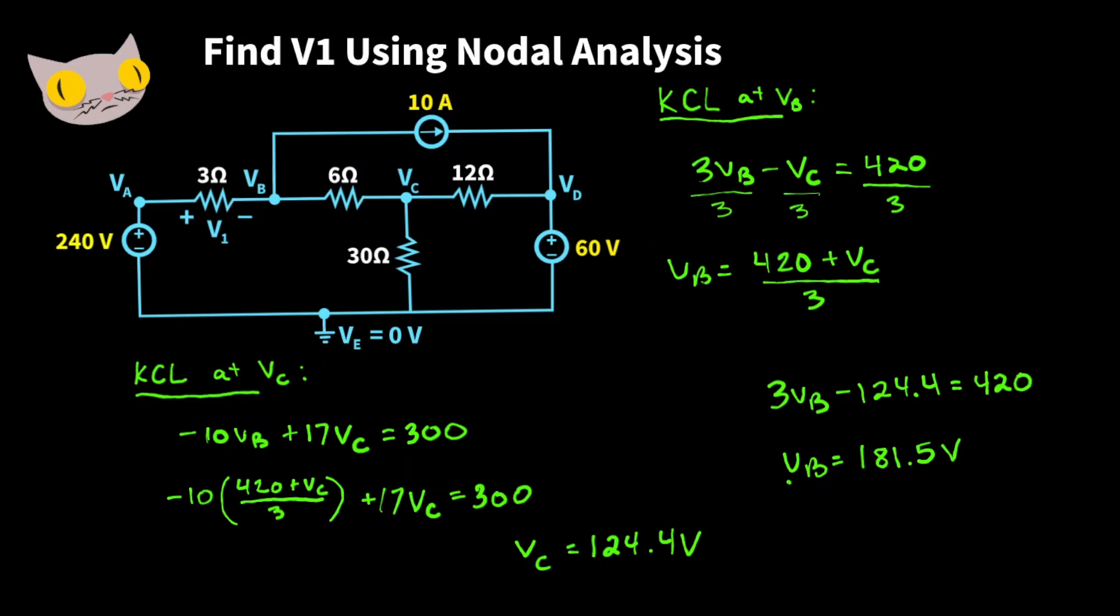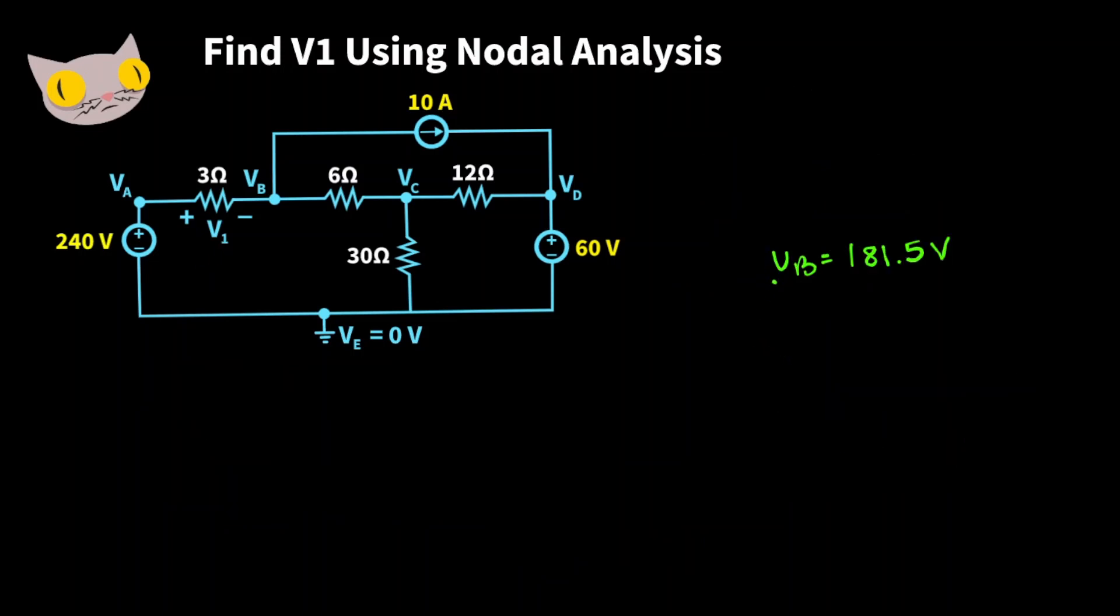So we have VB. Now we can find our missing voltage. So we have VB is equal to 181.5, VA we know is equal to 240 volts. Remember V1 can be found by taking the high potential and subtracting the low potential from it. And that's going to give us 58.5 volts.